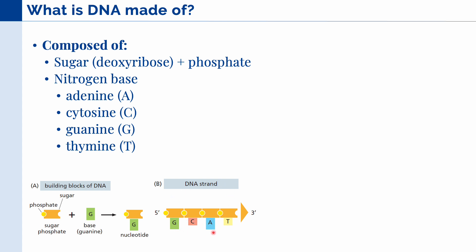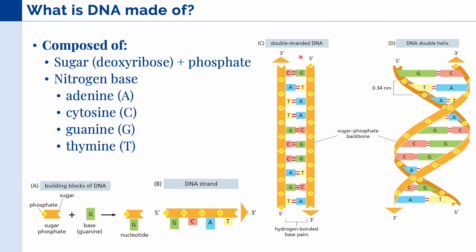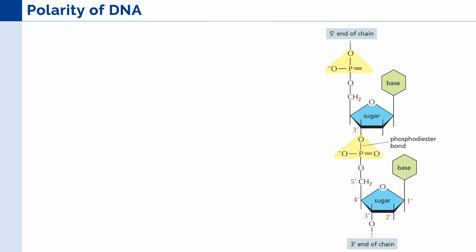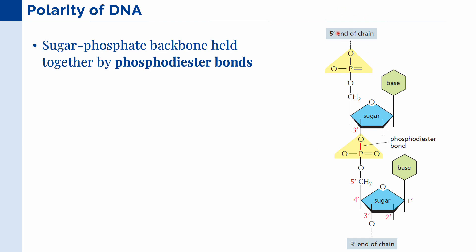DNA in all cells are double-stranded, and these two strands run anti-parallel to one another. Aside from this, it also forms a double helix structure, which you can see in this figure. One thing we need to take note of is that DNA is polar, meaning both ends of the DNA are not similar to one another. Here, we can see a single stranded DNA and its molecular structure, and we can see that the nucleotides are held together by phosphodiester bonds, and this is the sugar phosphate backbone here.